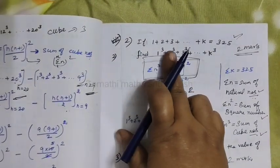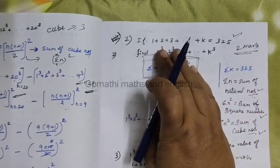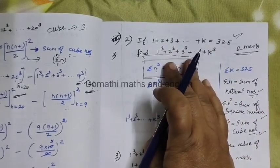Then the next one, if 1 plus 2 plus 3 etc. plus k equal to this, that is natural number given, you are finding cube number.